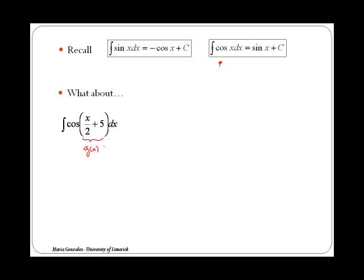Now what you have to ask yourself if you want to apply substitution is, do I have the derivative of g? In this case the derivative of g is a half. We could think about a one multiplying in front and then the derivative of g would be only a multiple of that.